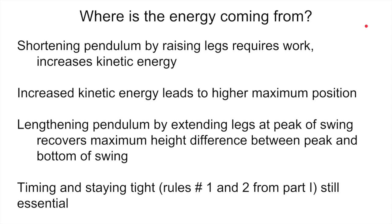It's nice to think about exactly where this energy is coming from. Shortening the pendulum by raising your legs near the peak of the swing requires work because you're pulling up against gravity, and that increases your kinetic energy — a common effect where pulling things in while spinning causes you to spin faster because angular momentum is conserved. That increased kinetic energy leads to a higher maximum angle. But then the flyer lengthens the effective pendulum by extending their legs back out at the peak of the swing, which allows them to recover the maximum height difference between the peak and the bottom. Extending legs at the peak — against less gravity — recovers that additional potential energy back into kinetic as they swing back down through the bottom, since a long pendulum means a large difference between peak height and bottom height. Timing and staying tight — rules one and two from part 1 — are still essential to not waste that energy gain.